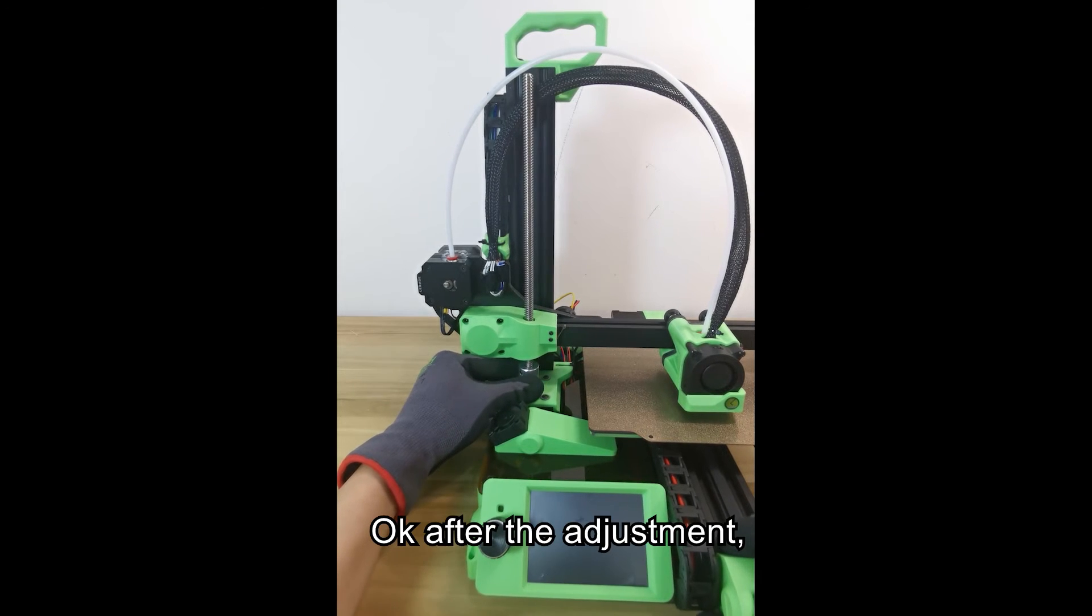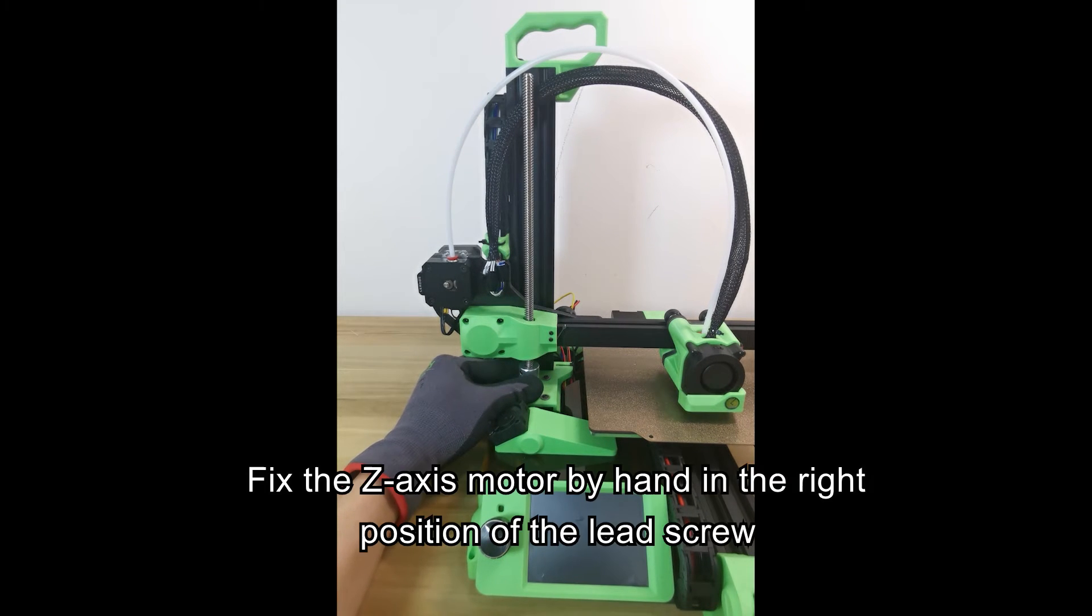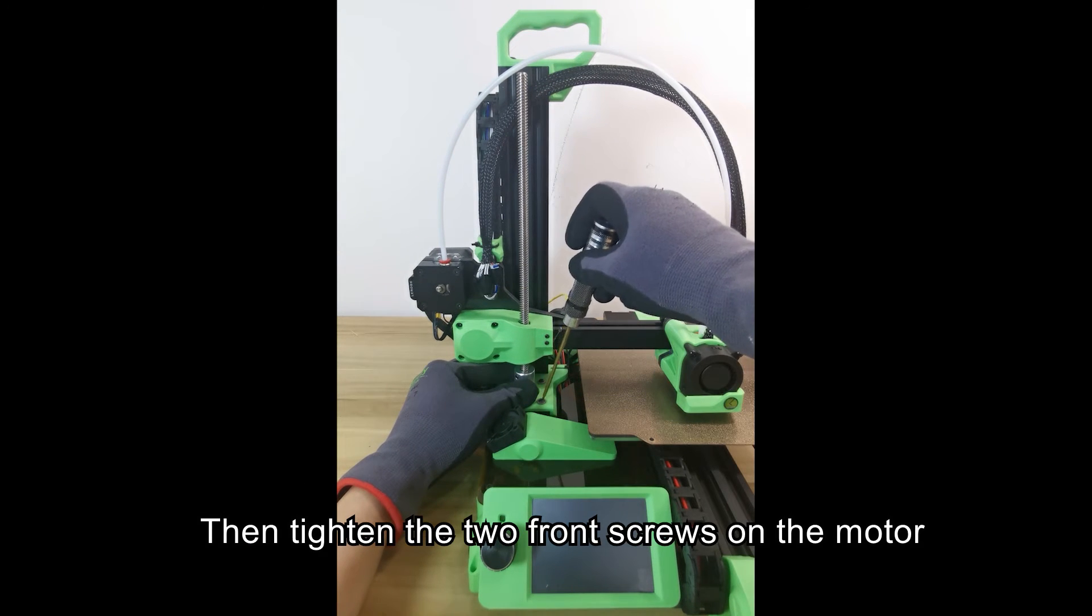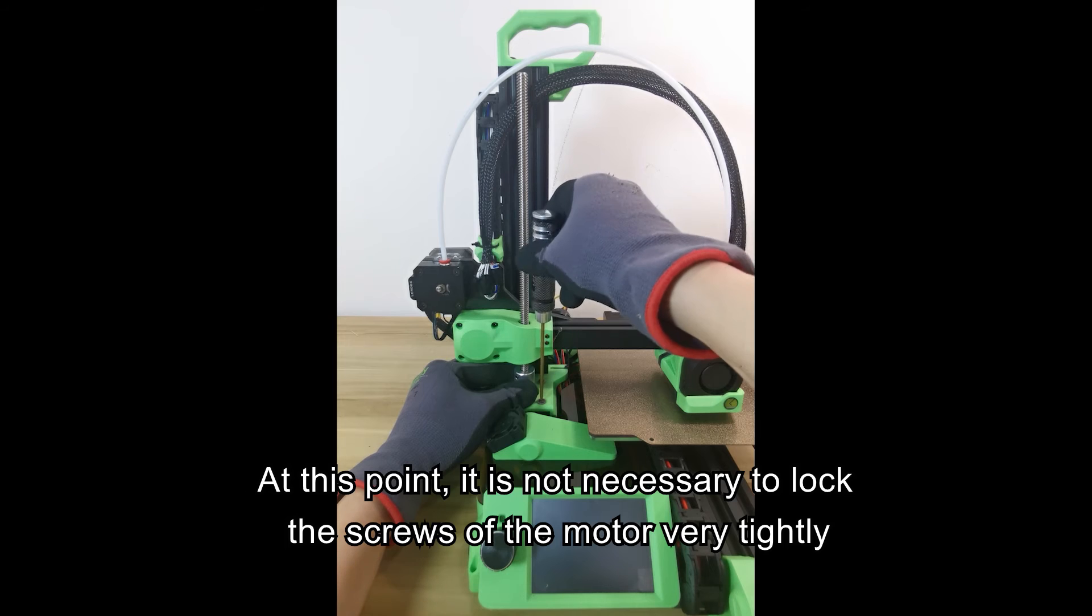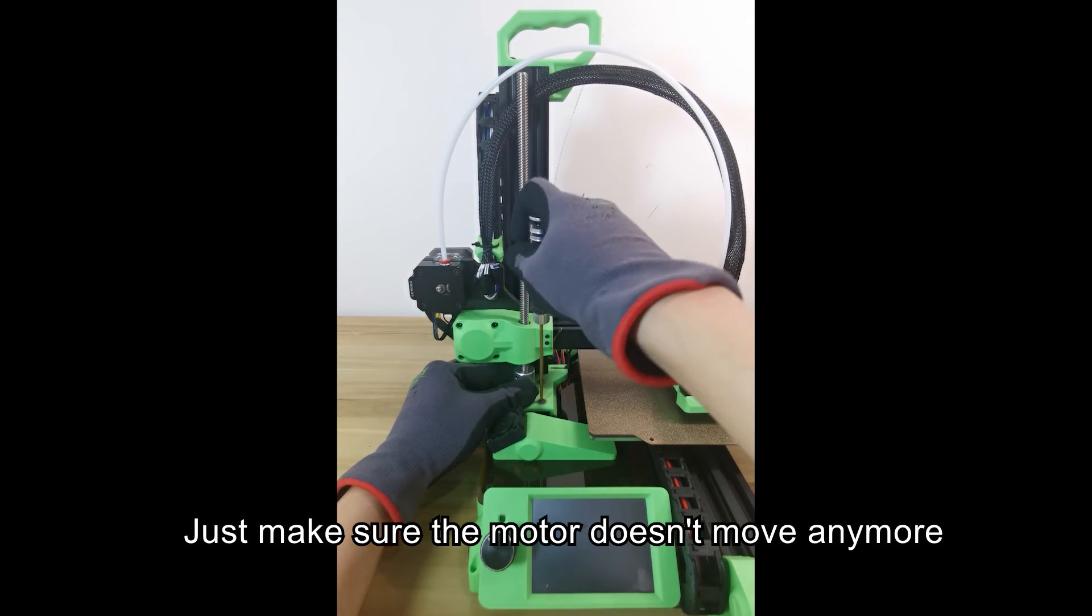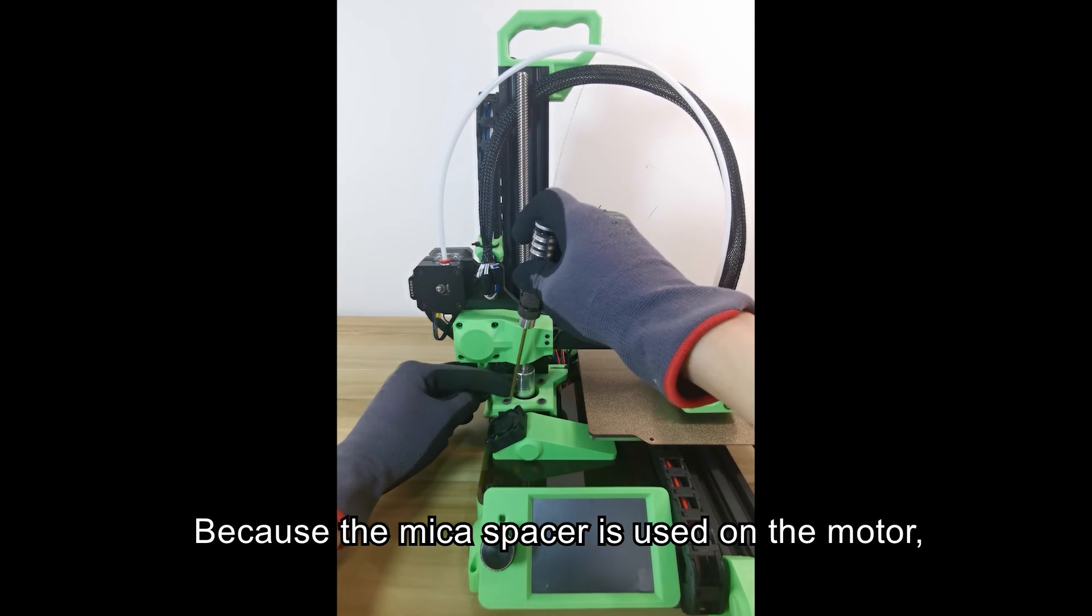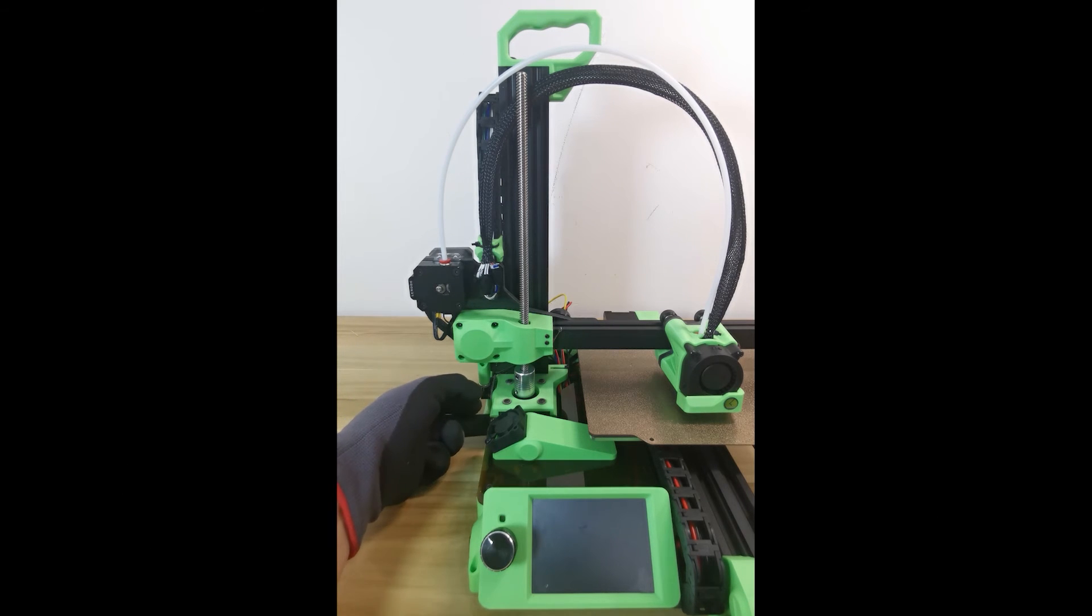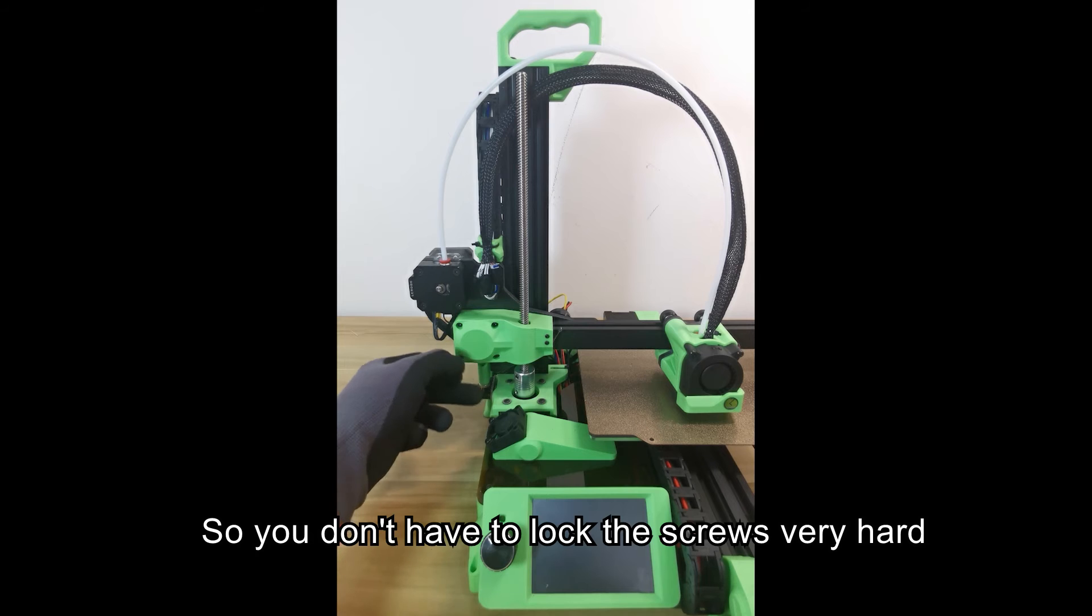Okay, after the adjustment, fix the Z-axis motor by hand in the right position of the lead screw, then tighten the two front screws on the motor. At this point it's not necessary to lock the screws very tightly - just make sure the motor doesn't move anymore. Because the mica spacer is used on the motor, it can isolate the heat of the motor and prevent the heat from being transferred to the printed part and causing deformation. So you don't have to lock the screws very hard.